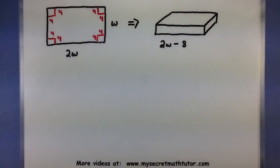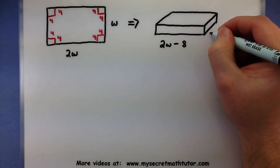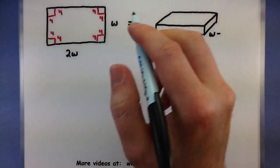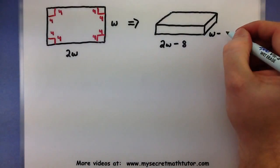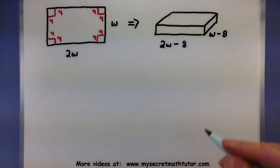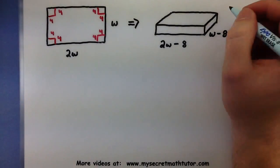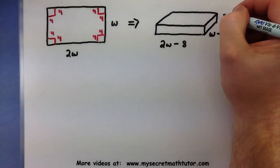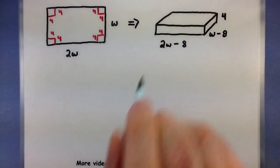That same thing happens with the width of our box. So it will be the width minus a couple of those 4 centimeter squares or W minus 8. The height of this box will come directly from those squares. So 4. Perfect.